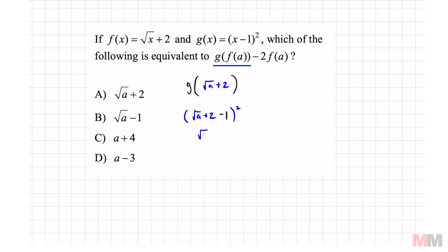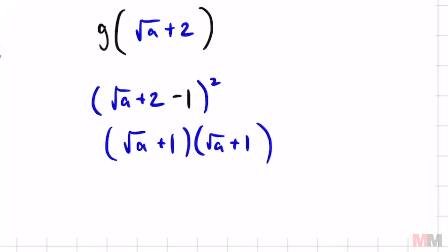You can combine like terms so that's just the square root of a plus 1 and when I am squaring this right here, just write it twice and distribute. Square root of a times square root of a, that's going to be a, root a times 1 plus another root a times 1 is going to be 2 root a and 1 times 1 is a positive 1.